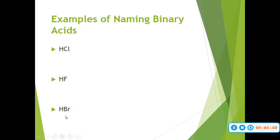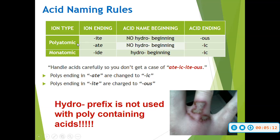With these three examples, the first thing you should notice is that they all start with H — so that lets us know that it's an acid. After it, we only have one atom: chlorine, fluorine, and bromide. If you didn't know how to name acids, you would simply name these as hydrogen monochloride, hydrogen monofluoride, hydrogen monobromide. They all end in IDE. So looking at our rules, we have a monatomic ion and it ends in IDE — so that means we will be using hydro, and we're going to change the ending to IC.